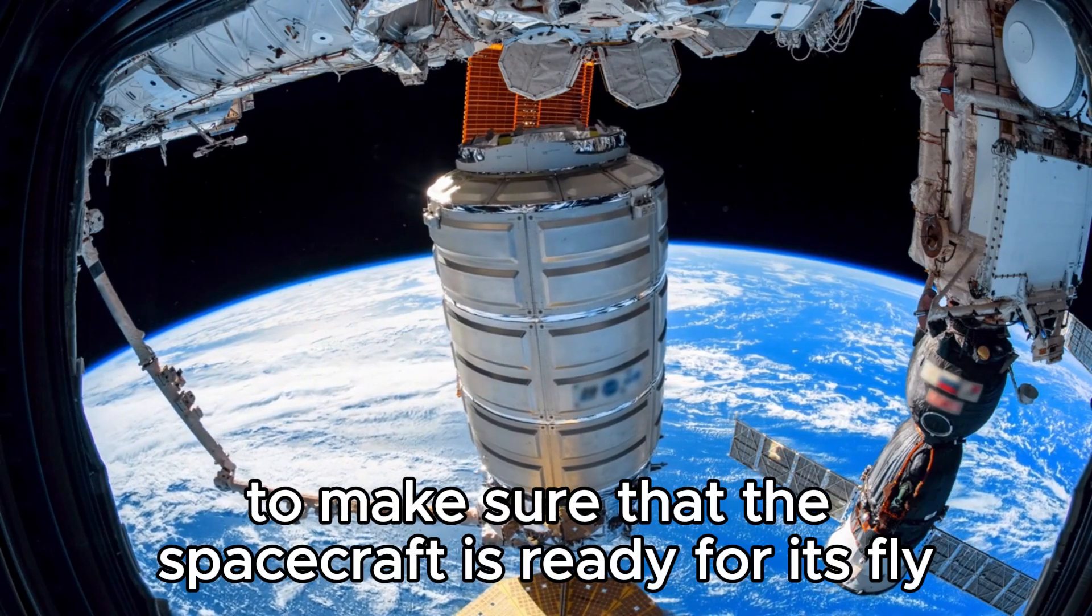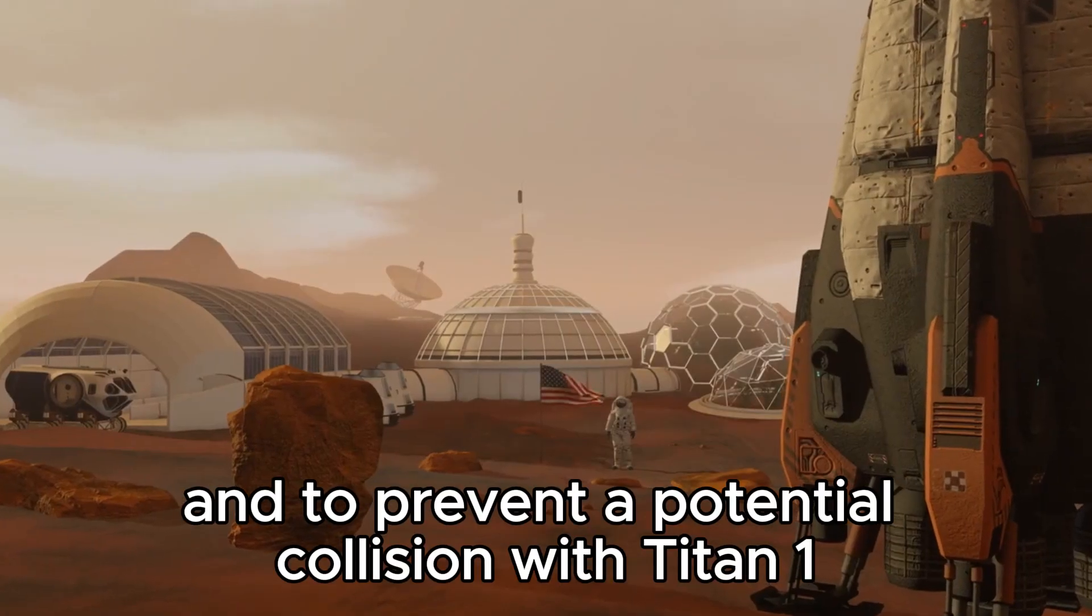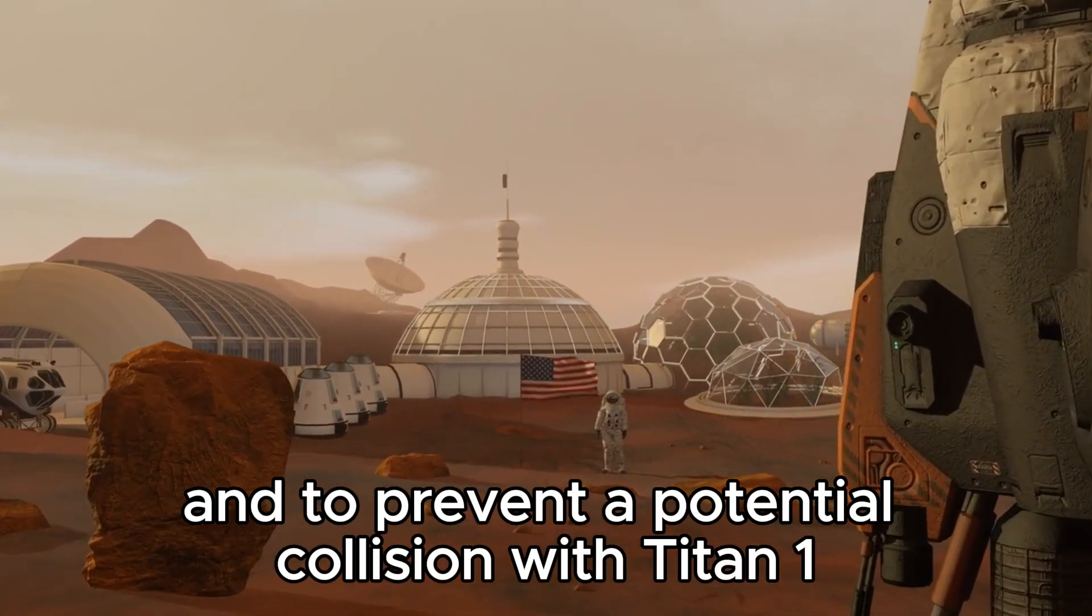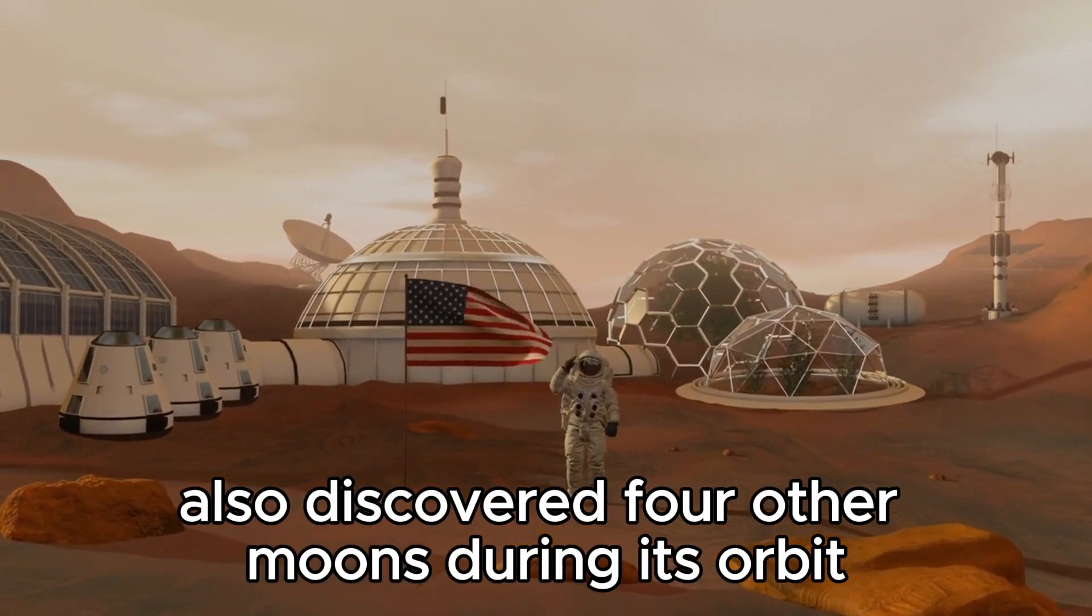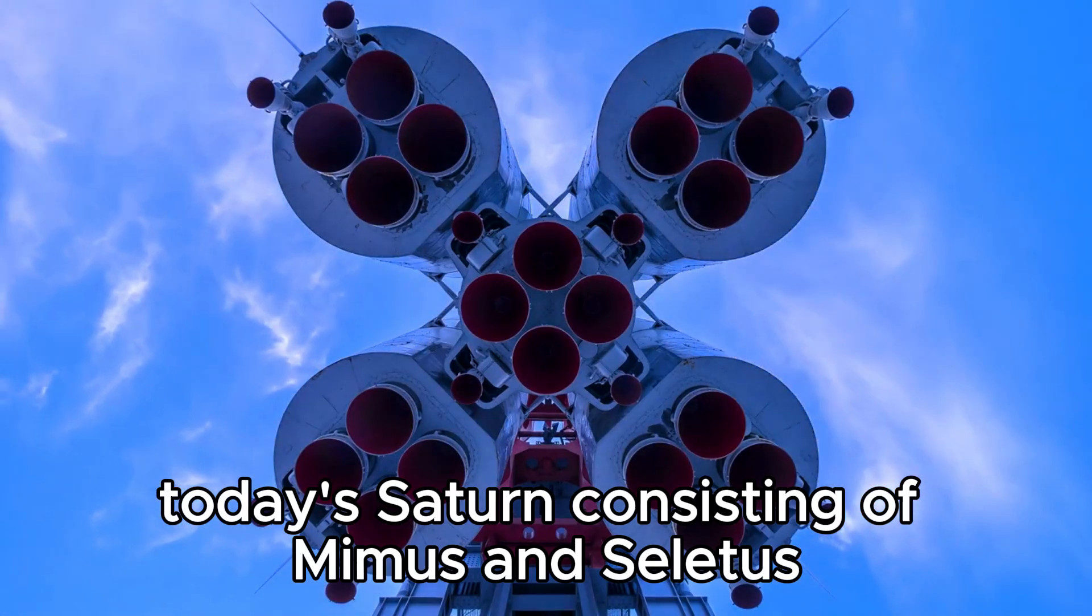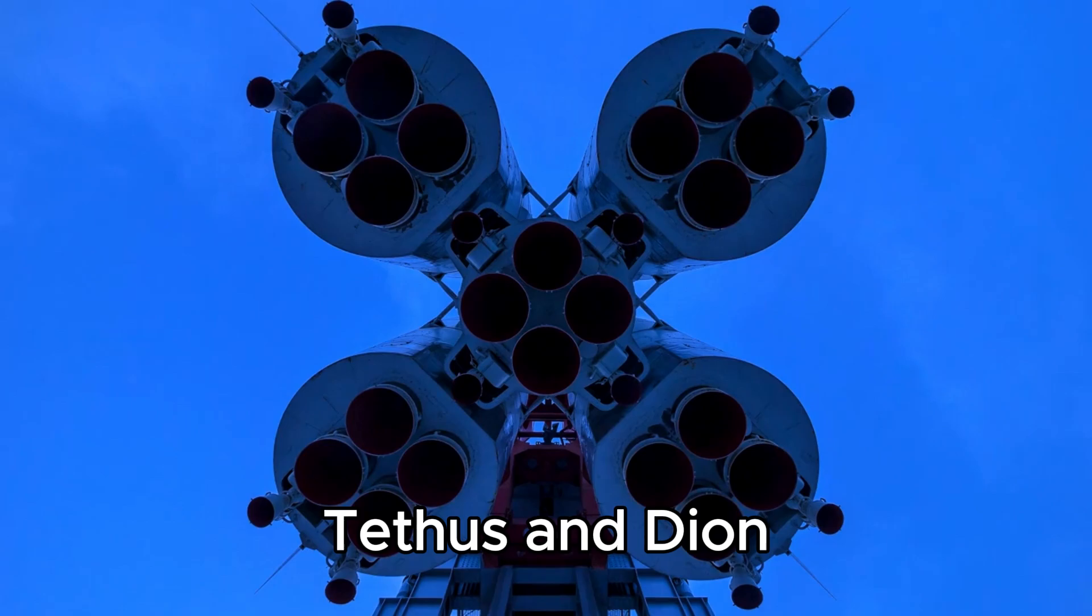Accurate maneuvers were made to ensure the spacecraft was ready for its flyby of Saturn and to prevent a potential collision with Titan, one of Saturn's moons. Voyager 1 also discovered four other moons during its orbit of Saturn, including Mimas, Enceladus, Tethys, and Dione.